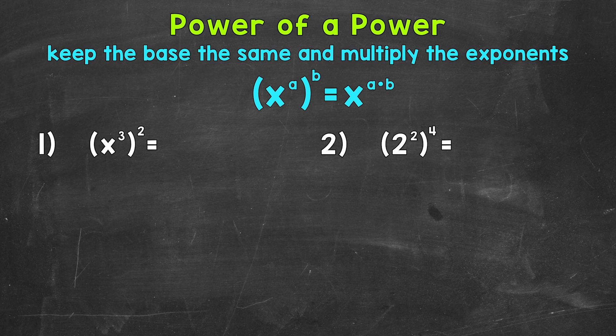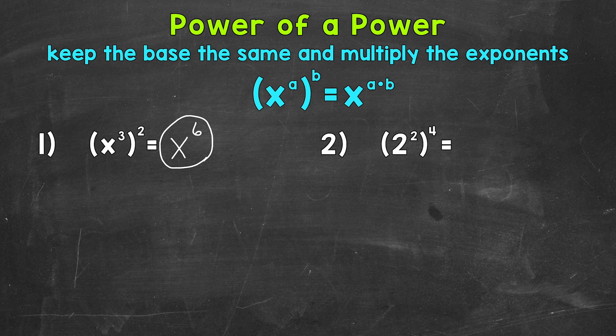Starting with number 1, where we have x to the power of 3 to the power of 2 — so x cubed, and then we're going to square it. We keep the base the same, so we keep our base of x. And then we multiply the exponents: 3 times 2 gives us 6. So our solution is x to the power of 6.